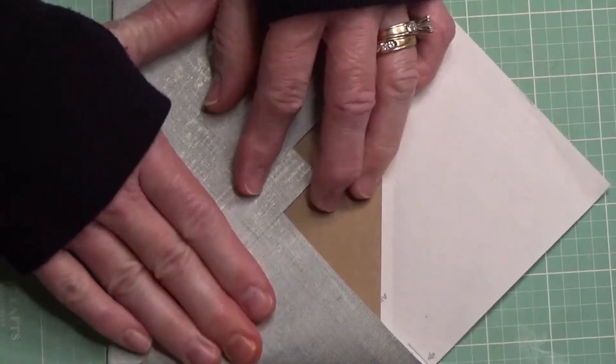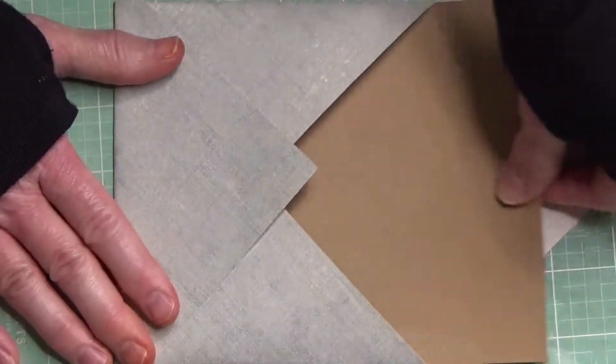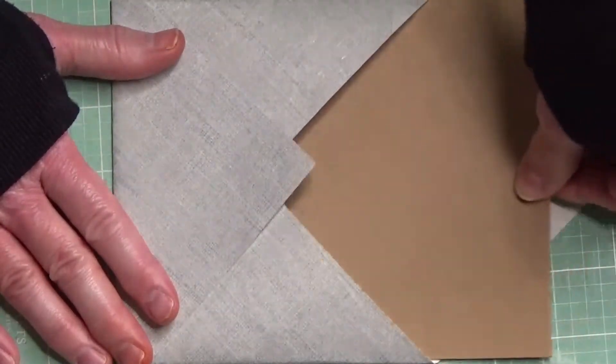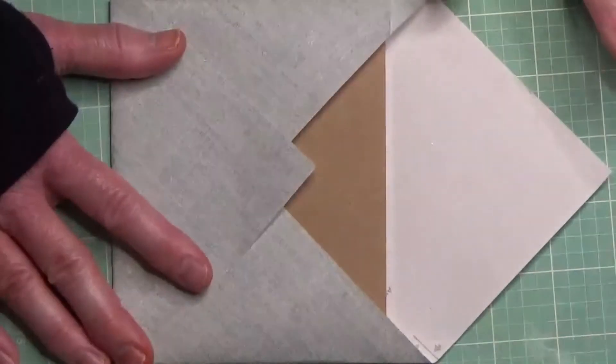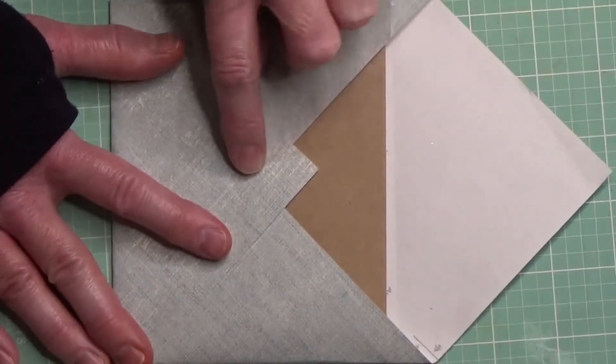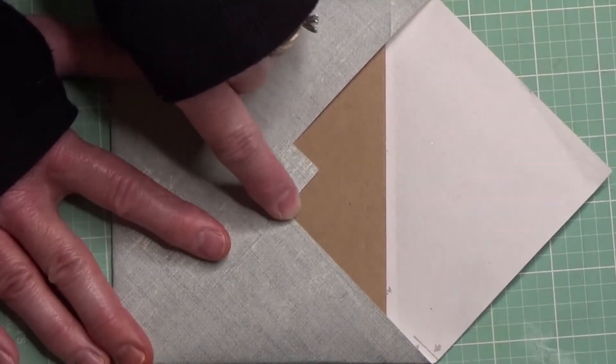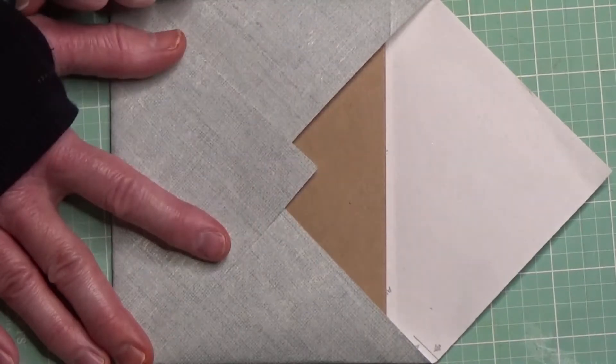So let's go ahead and fold this one up. That's going to be the bottom of our envelope. I'm going to check it again before I add any adhesive. So that's moving in and out just fine. If you want to, you could cut off this little square piece. I don't really think it's necessary.